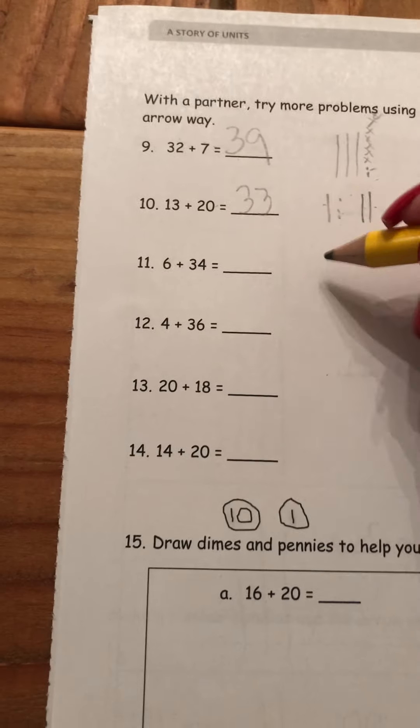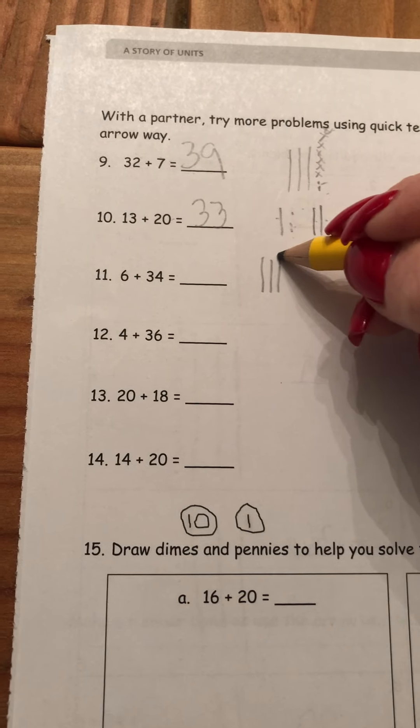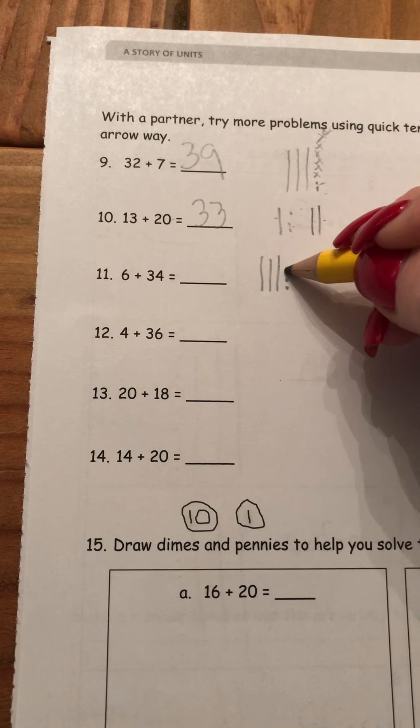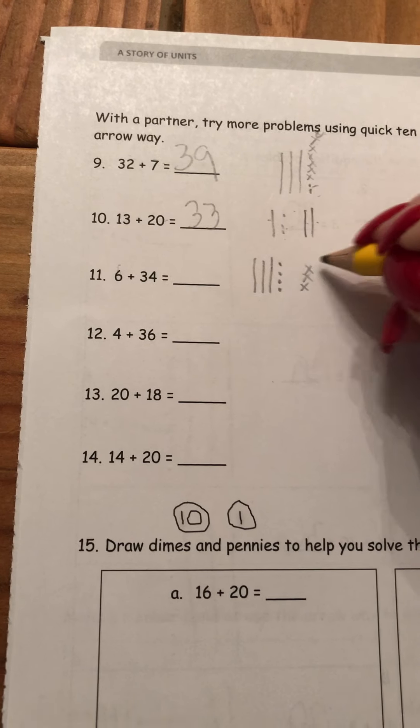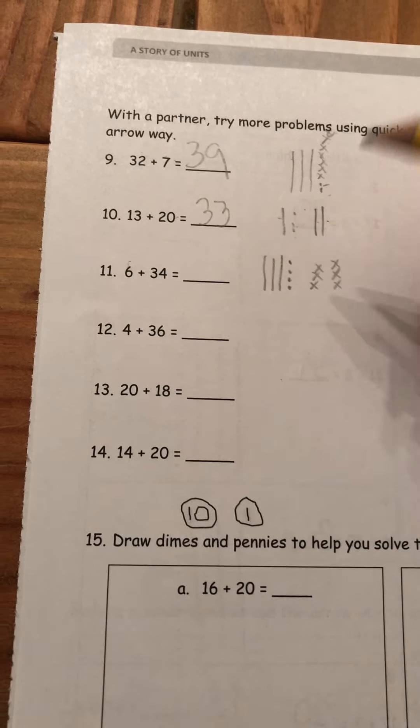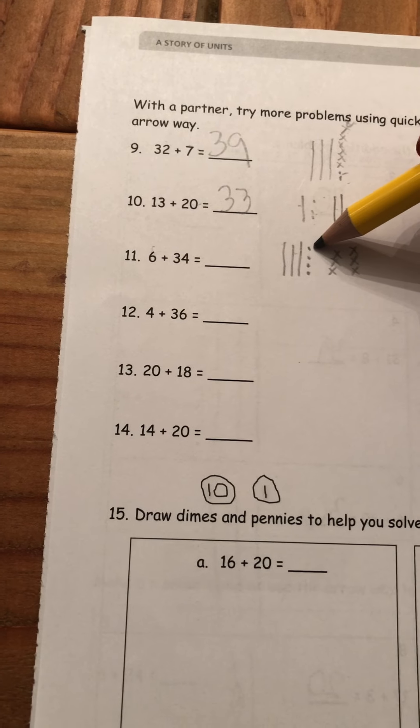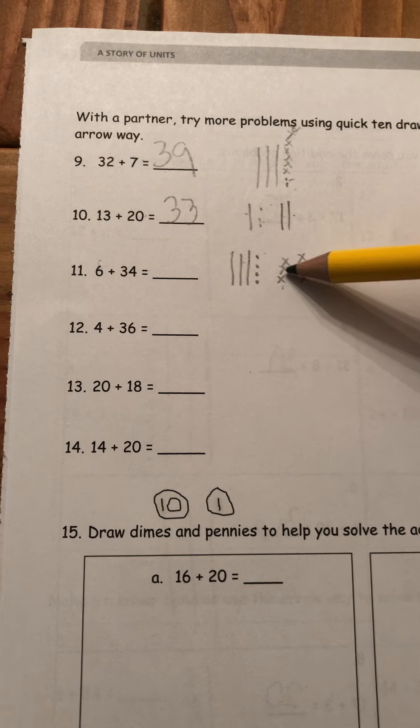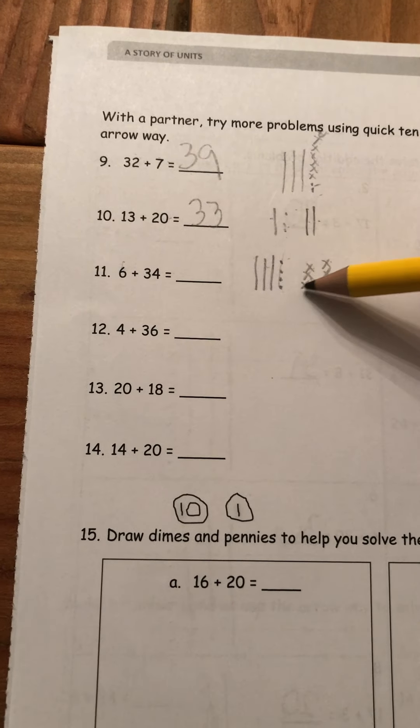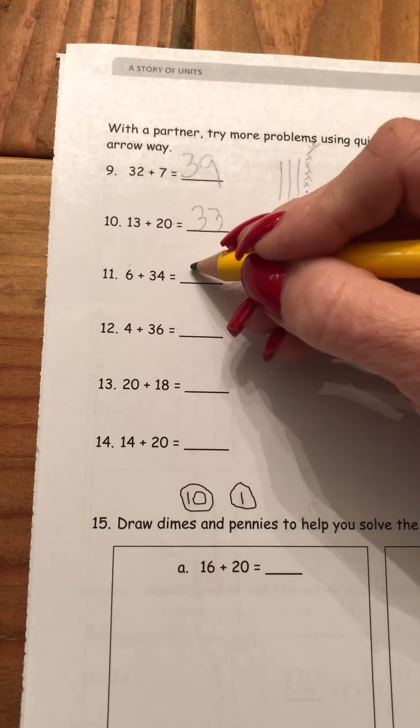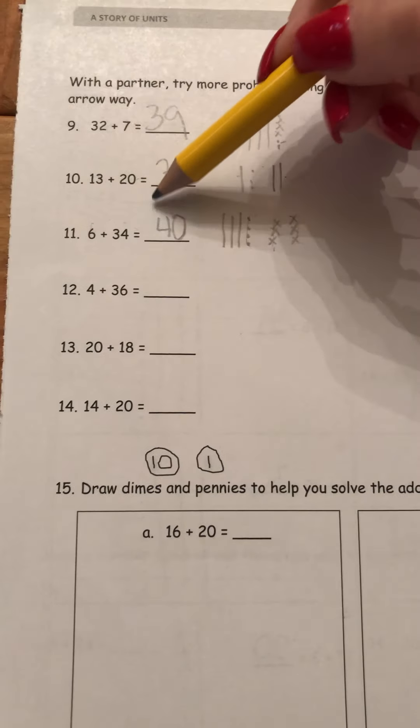Quick 10, 6 plus 34. I'm going to do my larger number first. 10, 20, 30, 31, 32, 33, 34. And I need 6 more. 1, 2, 3, 4, 5, 6. 10, 20, 30. And then that's the 34. I count on from 34. 35, 36, 37, 38, 39, 40. Ooh, that is actually a quick 10. I didn't put them in a tall line because I don't have a lot of room. So 6 plus 34 equals 40.